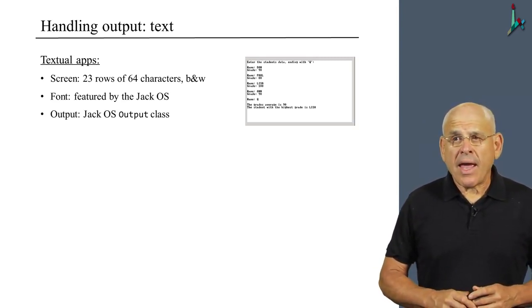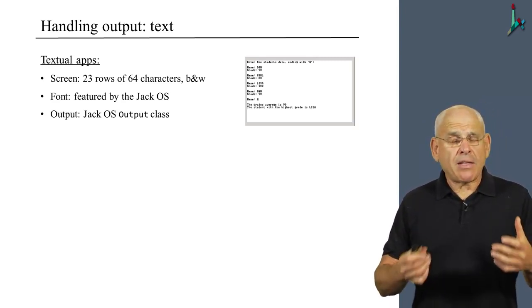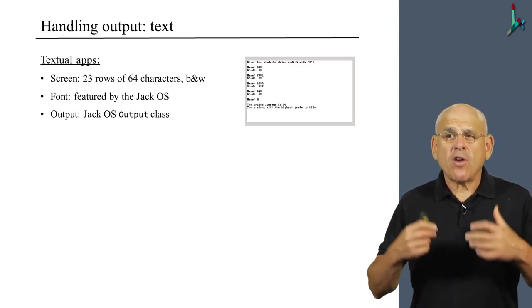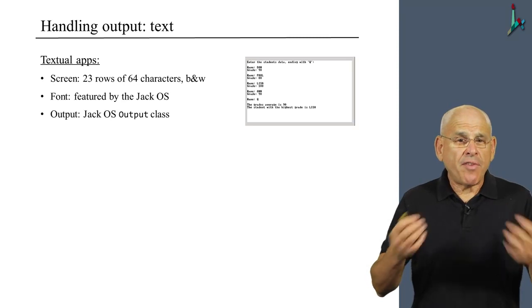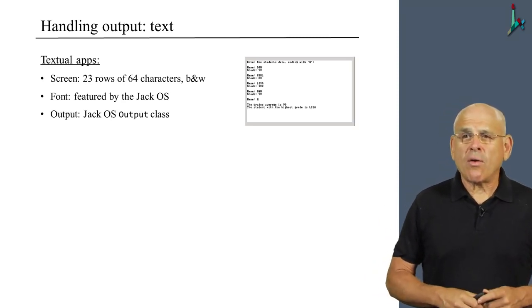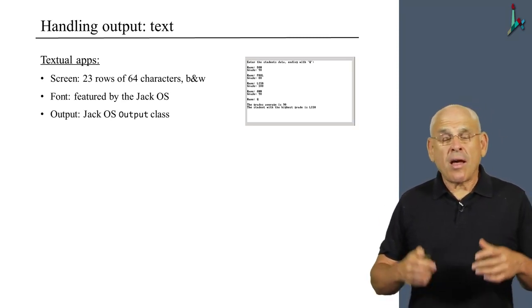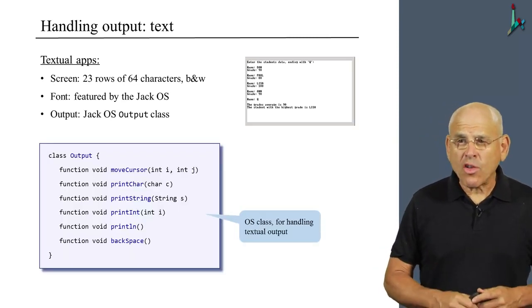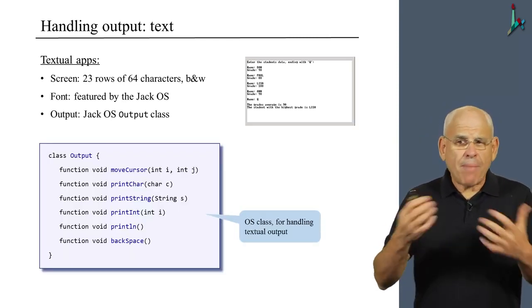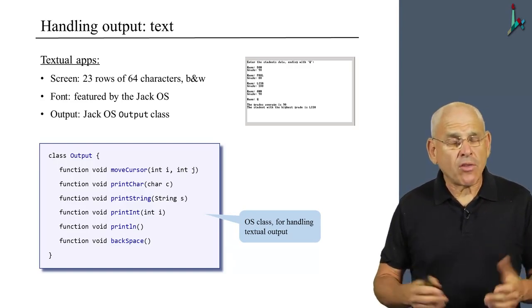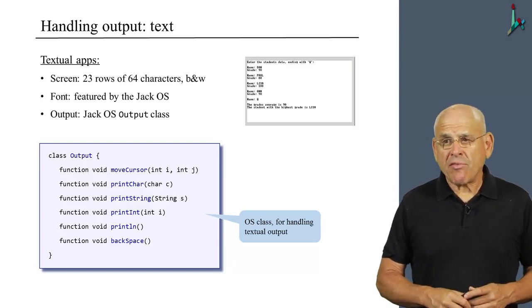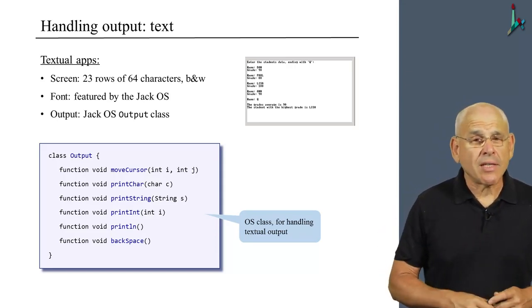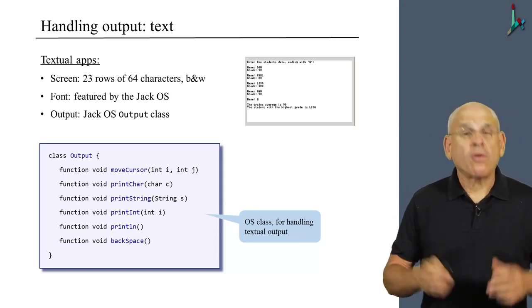If you're using the supplied Jack operating system for writing your outputs, then the operating system features a fixed font that you are welcome to use. Here's the API of this class. The class is called Output, and it features a bunch of self-explanatory functions for handling textual output.